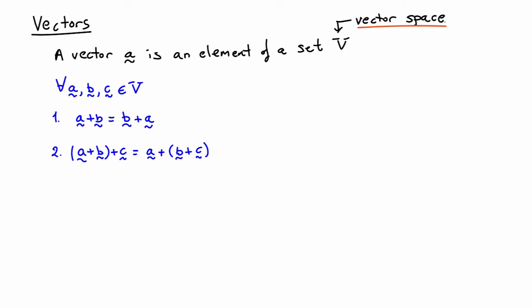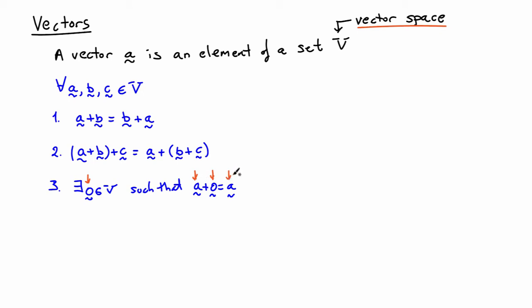The second property is that addition is associative — you can add two vectors and then add a third, or add the second two vectors together and then add the first, and you should get the same result. The third property is that there must be a zero element, denoted with the letter o with an underbar, which has the property that if you add the zero element to any other element of the vector space, you get back the original vector.